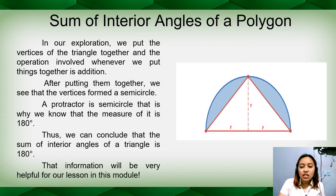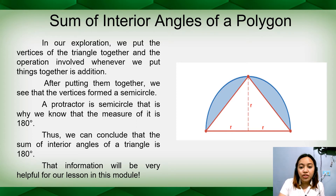This is the figure of our activity — we have the triangle and then the arc. As you can see, if you look for a protractor, the measure of that is 180. So our basis for the sum of interior angles is the triangle — the measure of the interior angles of a triangle is 180 degrees.